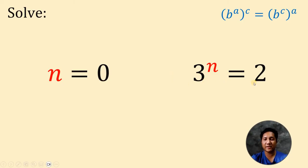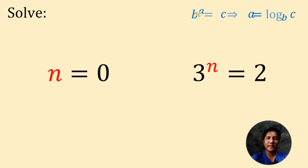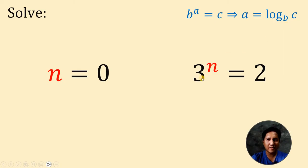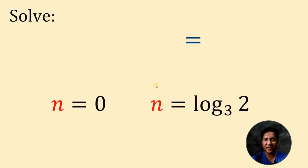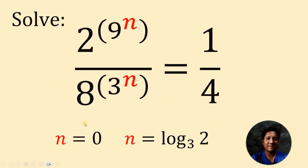Now on the second case, we have 3 raised to n equals 2. At this point, to solve for the value of n, we need to convert this exponential equation to a logarithmic equation. Take note that when we have b raised to a equals c, then this can be converted into a equals logarithm of c to the base of b. Therefore, 3 raised to n equals 2 can be written as n equals logarithm of 2 to the base of 3. Therefore, we have two possible values for n: namely, n equals 0 or n equals logarithm of 2 to the base of 3. And as always, we are done.